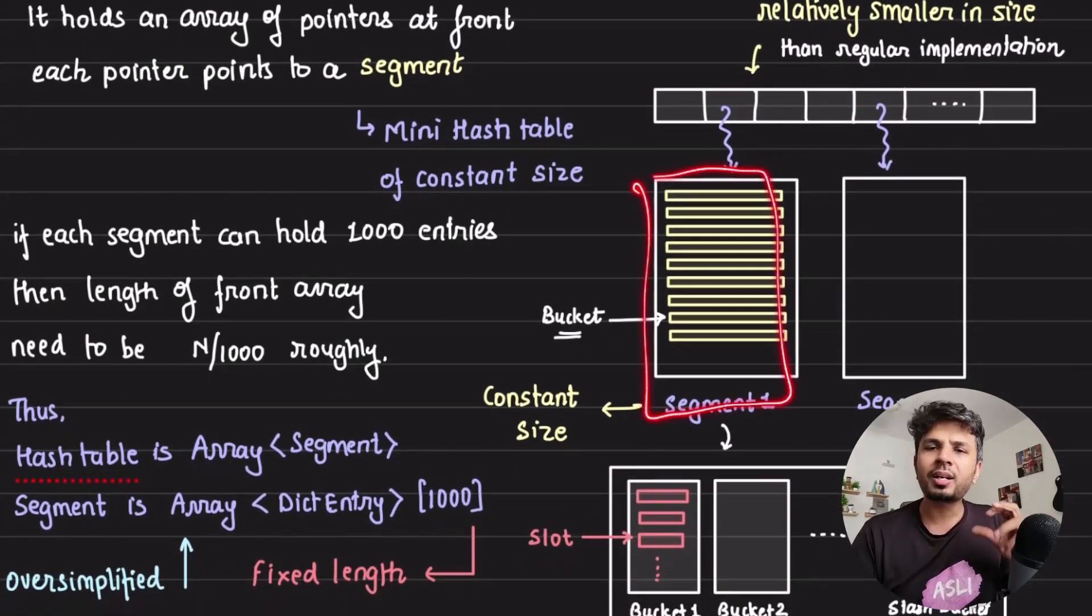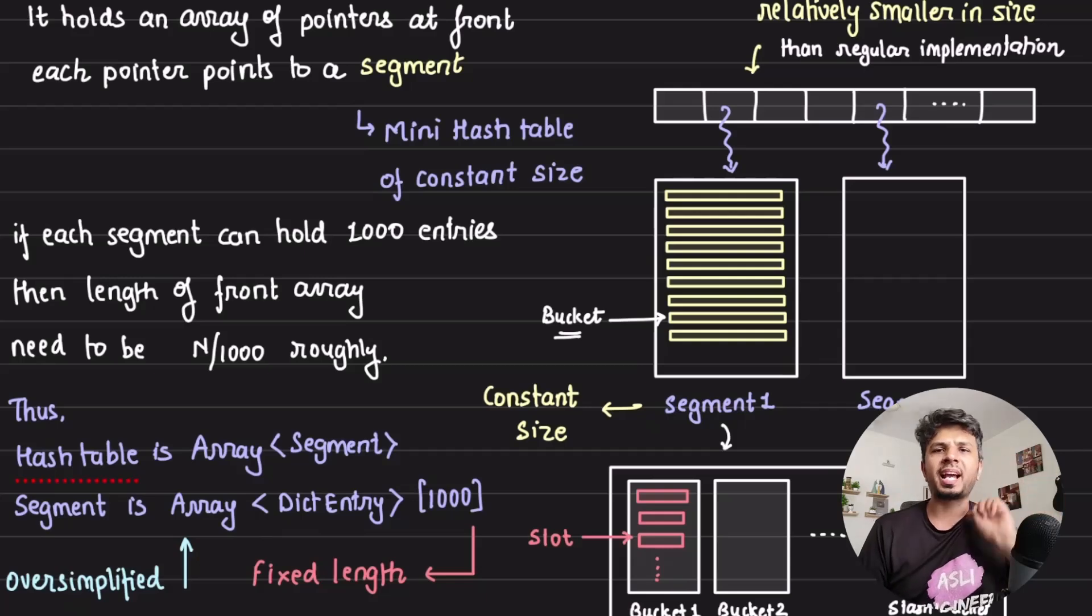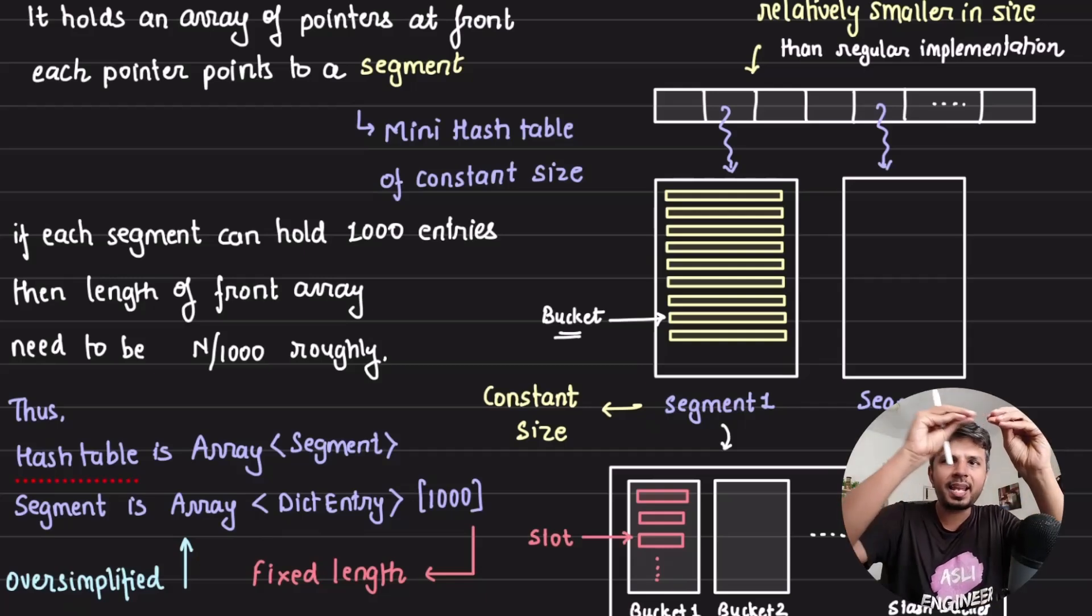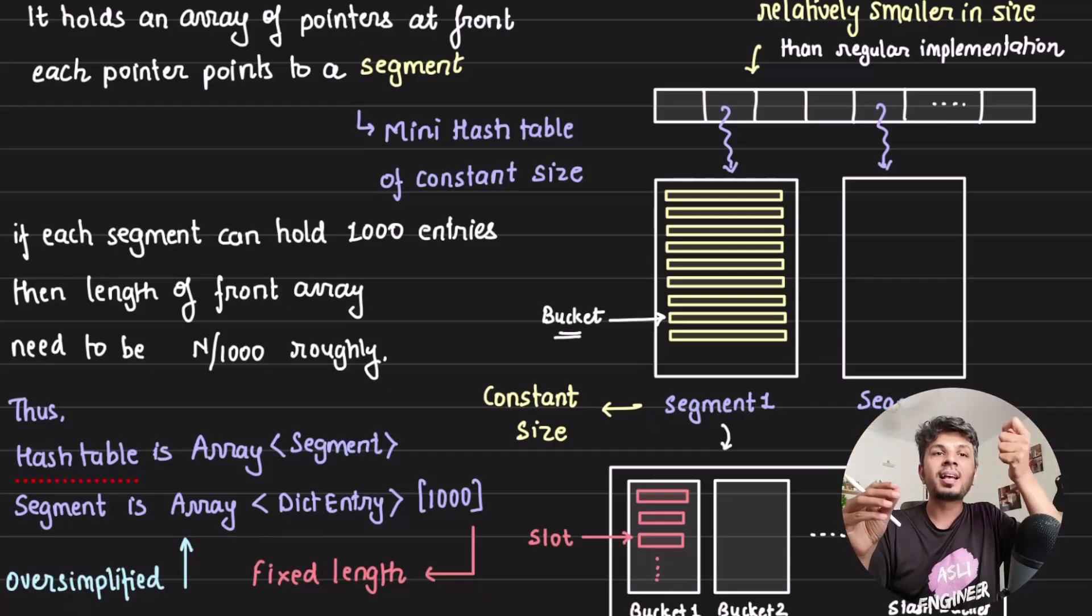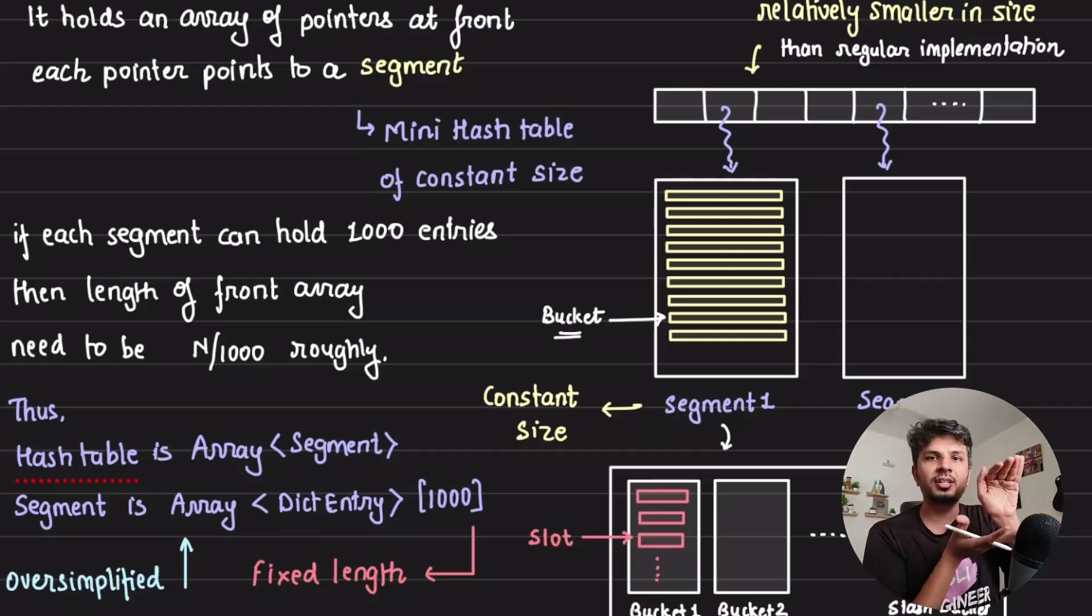Consider each segment as a mini hash table. It's basically an array of segments and each segment is actually a hash table of constant size. It's not ever growing, it's of constant size.